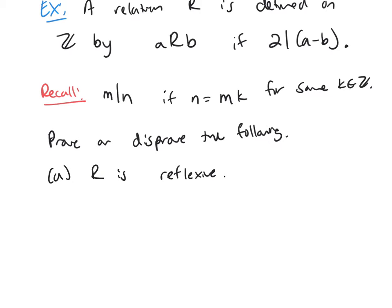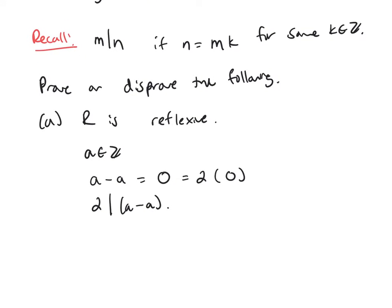Let's take an arbitrary integer A and look at A minus A. That's zero, and we can write this as two times zero. So two divides A minus A, which means A is related to itself, and so R is reflexive.